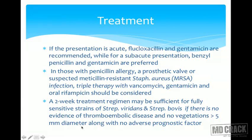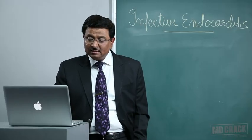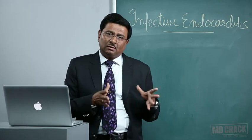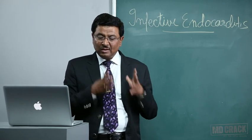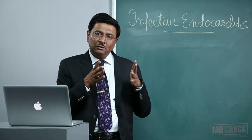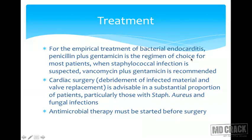The two-week regimen applies when there is no vegetation more than 5 mm in diameter and no adverse prognostic factors. For empirical treatment of bacterial endocarditis, penicillin plus gentamicin is the regimen of choice for most patients. When staphylococcal infection is suspected, vancomycin plus gentamicin is recommended. Cardiac surgery including removal of infected material and valve replacement is advisable, particularly for Staphylococcus aureus or fungal infections.